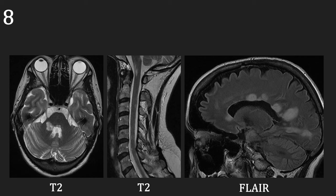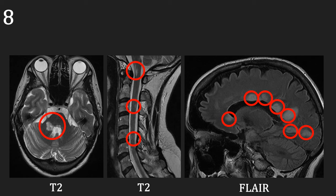Our next patient is a 44-year-old female who presented with double vision, dizziness, cerebellar signs, and hyperreflexia. This had been going on for several months and she underwent an MRI to investigate further. On the axial brain sequence, we can see a bright lesion next to the fourth ventricle, but also multiple lesions in the cervical spinal cord and perpendicular to the lateral ventricle. This is a case of demyelination or multiple sclerosis.